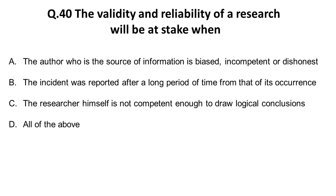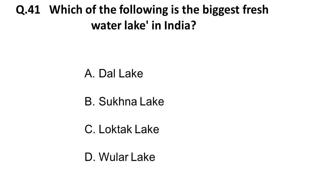Next question: the validity and reliability of research will be at stake when — option A, the author or source of information is biased, incompetent, or dishonest: correct, if biased you cannot trust the findings. Option B, the incident was reported after a long period from its occurrence: correct, if not properly documented at the time of happening results may be poor. Option C, the researcher is not competent enough to draw logical conclusions: also correct. The correct answer is all of the above.